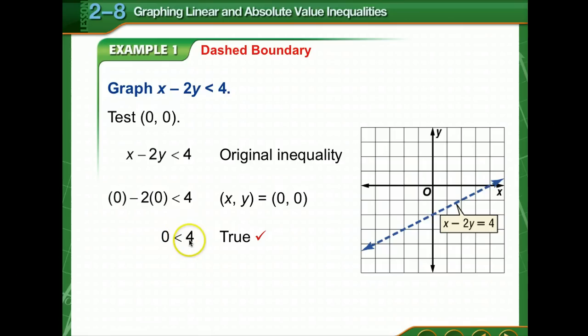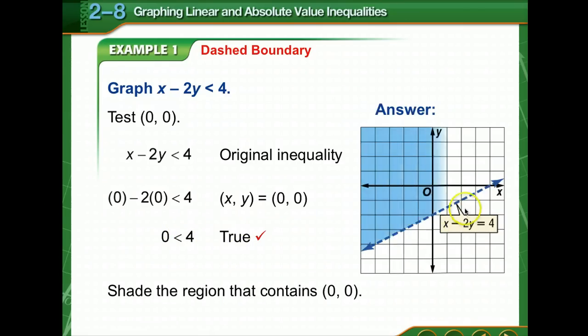Is 0 less than 4? Yes, it is. So that means that we're going to shade the region that contains the point (0, 0), because if (0, 0) makes it true, then everything on this side of the equation will make it true. These are all solutions to this inequality, everything that's shaded.